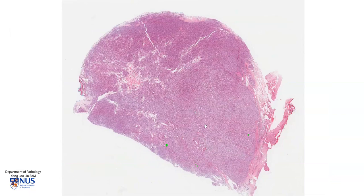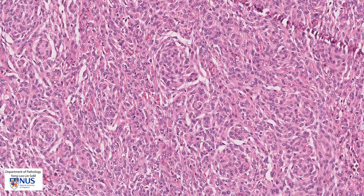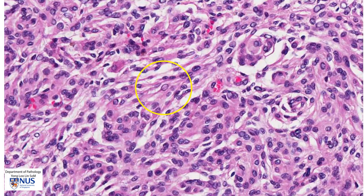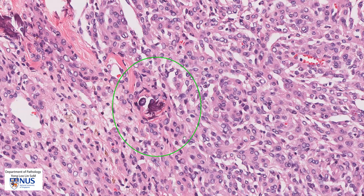In summary, this is a meningothelial meningioma with sheets of polygonal uniform cells with oval nuclei, with meningothelial whorls, with occasional intranuclear pseudoinclusions — and another nice example can be seen here — and also occasional psammoma body calcifications.